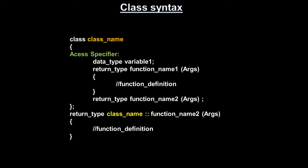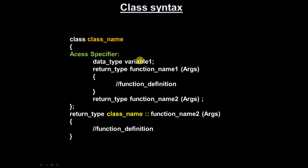To create a class, first you need the 'class' keyword followed by the class name, then open braces. Inside, you provide an access specifier, then declare data members as well as function members. A class can consist of data members and function members, also called methods. Data members use data types like integer, character, float, or string, followed by variable names.